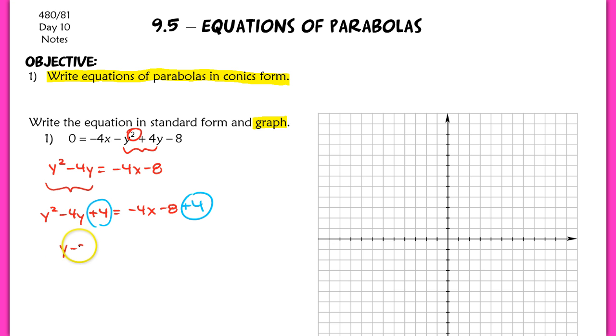Now I can rewrite this as y minus 2, that quantity squared, equals negative 4x minus 4. And then from here, what we're going to do is factor out that negative 4, so we can write that as x plus 1 on the inside here. So we have the quantity y minus 2 squared equals negative 4 times x plus 1. So that's our equation in standard form.